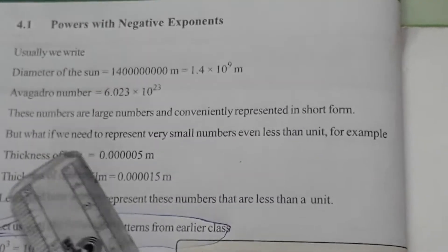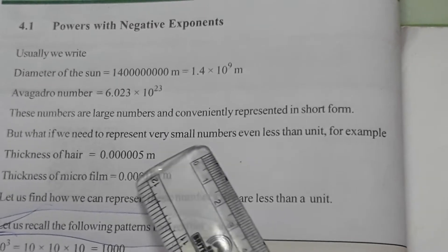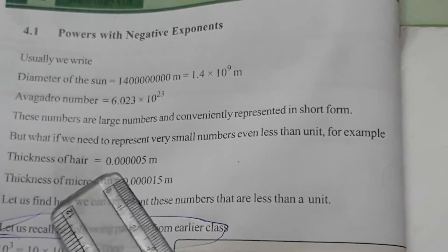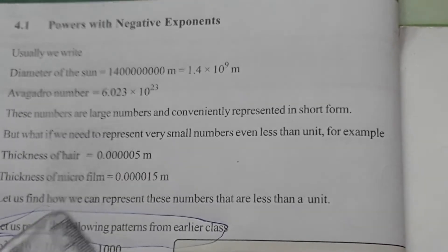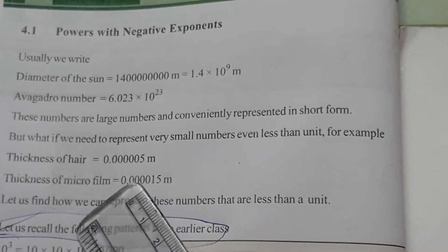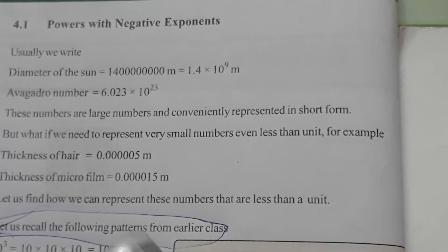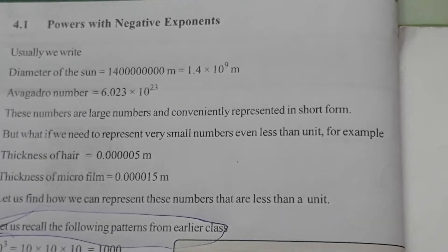But what if we need to represent very small numbers even less than units? For example, thickness of hair, thickness of microfilm. Let us find how we can represent these numbers that are less than a unit.